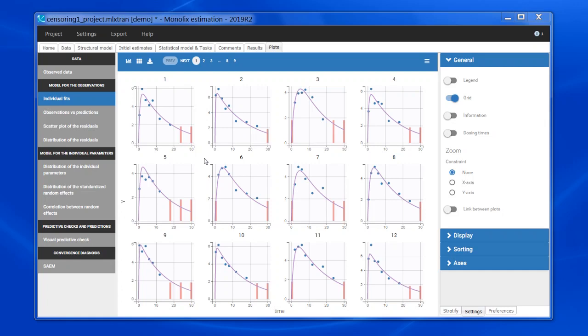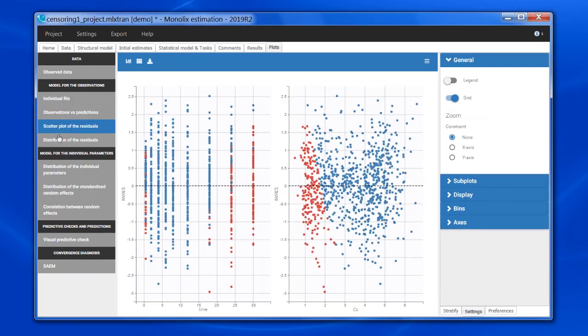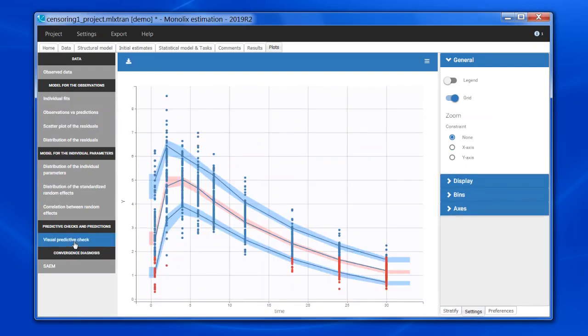In the Monolix plots, in the individual fits, the BLQ data are displayed as a red band, showing the censored interval in which the observation could be. In the obs vs. pred, scatter plot of the residuals and VPC, the censored data is displayed as red dots.